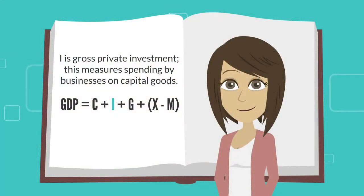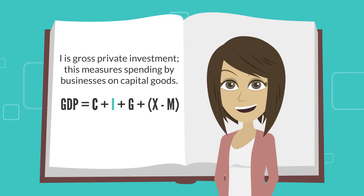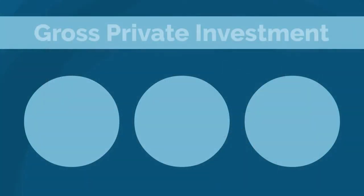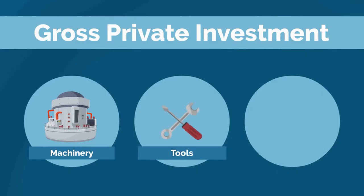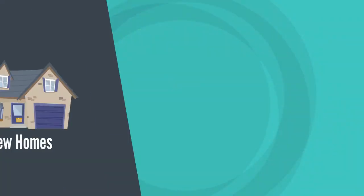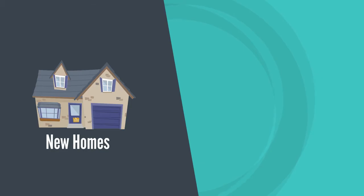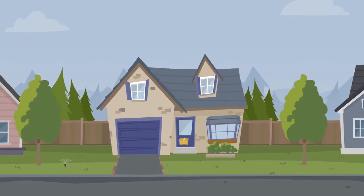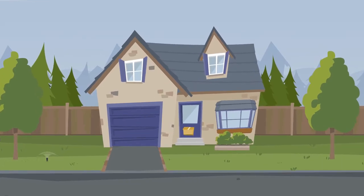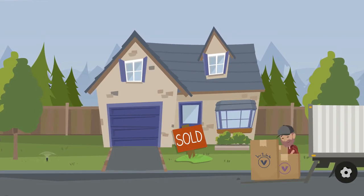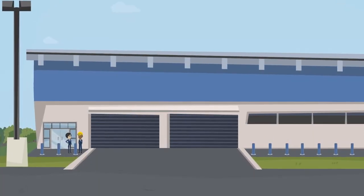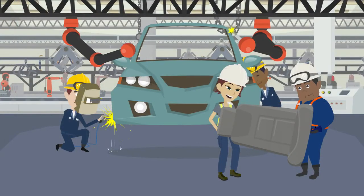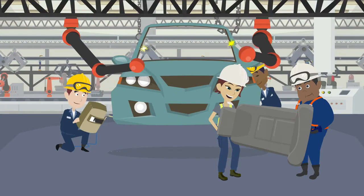I is gross private investment. This measures spending by businesses on capital goods — goods such as machinery, tools, and buildings. Investment also includes household purchases of new homes, goods, and business additions to inventory. Notice this is new housing; when the house is resold, it is not counted as a new addition to GDP. That is true for other goods, too. GDP is about measuring production of new goods and services.